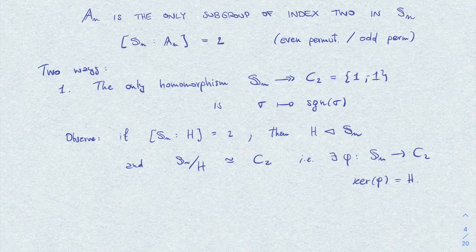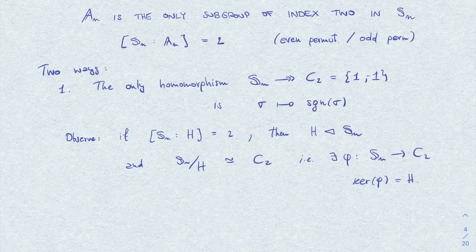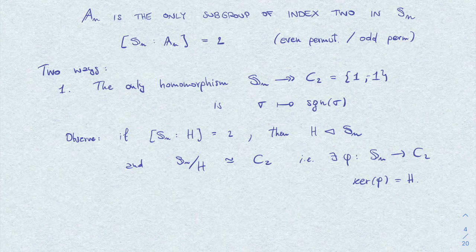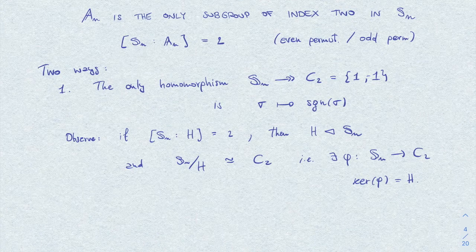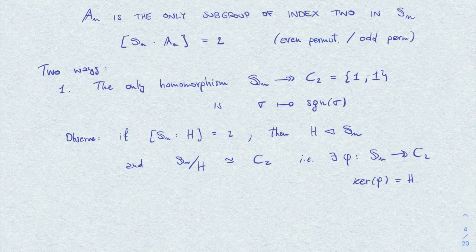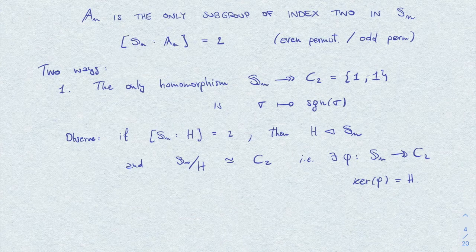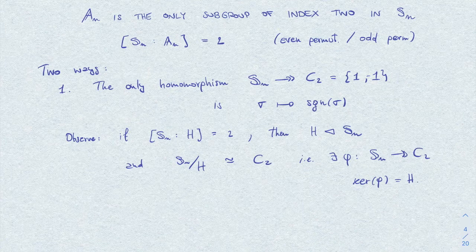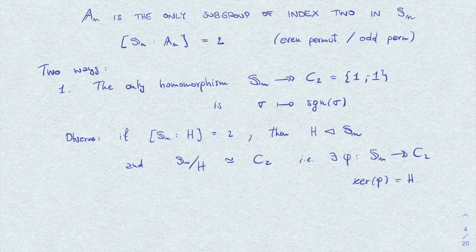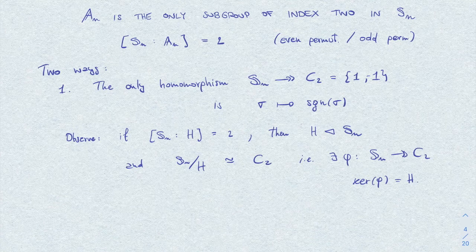So clearly if we show that any, of course here phi is surjective, if we show that there is only one surjective homomorphism of this form, then there is also only one H, namely the kernel of the sign function, which is of course A_n.